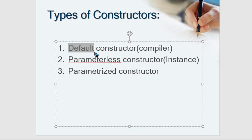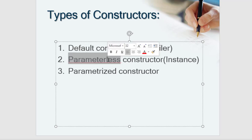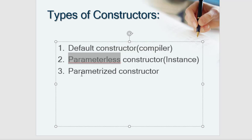So this is the role of the default, parameterless user-defined constructor without arguments, and the parameterized constructor with arguments: the parameterless initializes data members to default values, while the parameterized initializes data members as per the arguments passed.